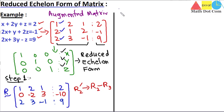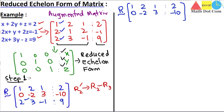Next, to make the first element of the third row zero, we apply R3' = R3 - 2R1. The first and second rows remain as is. Applying this operation to the third row gives us zero, minus one, minus three, and five. Now the first column reads one, zero, zero — so we are done with the first column.